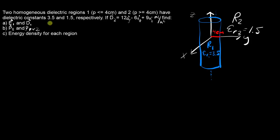They give you the relative permittivities, 3.5 and 1.5 for region 1 and region 2, and they give you the electric flux density of the second region. So let's start with the first part. When doing these boundary condition problems, you want to list a couple of things.